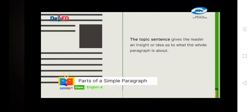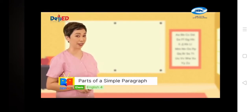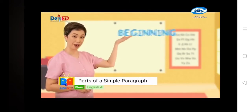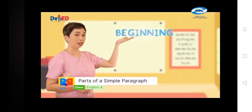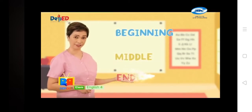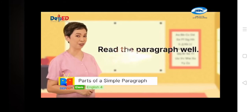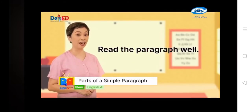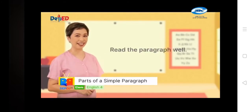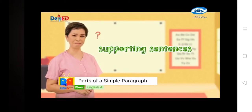The topic sentence gives the reader an insight or idea as to what the whole paragraph is about. It states the main idea of a paragraph. Most of the time it is located at the beginning of a paragraph, but sometimes it can also be found in the middle or even at the end. You have to read the paragraph well so that you will be able to identify the topic sentence correctly. Most of the sentences in the paragraph are considered supporting sentences.